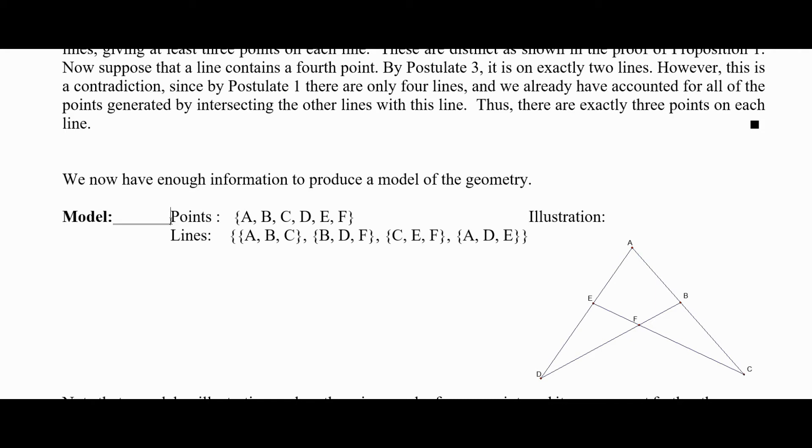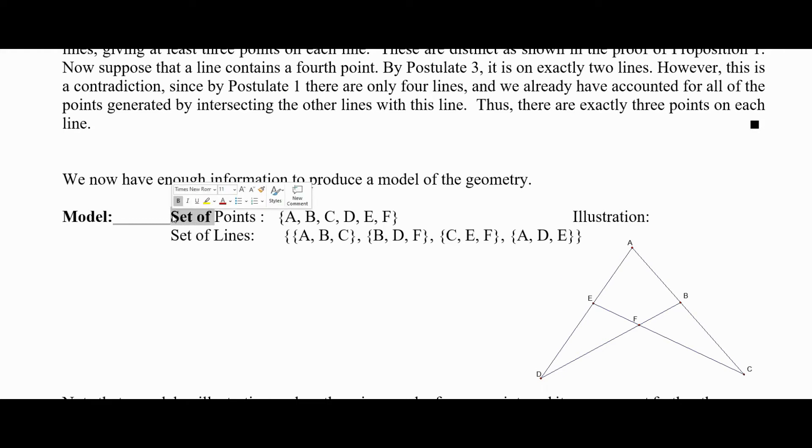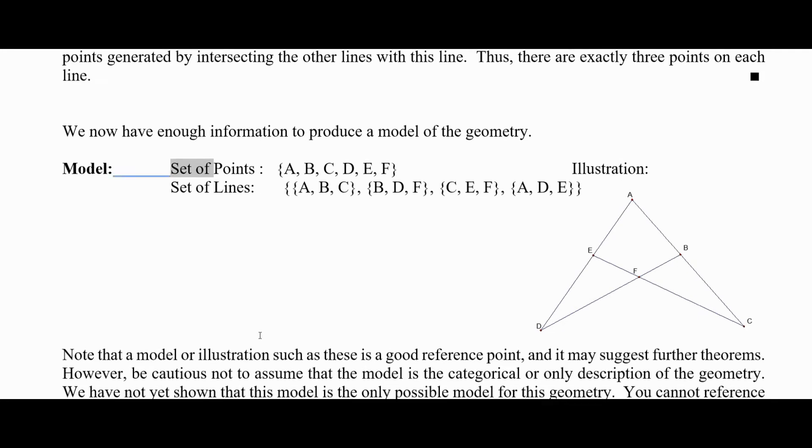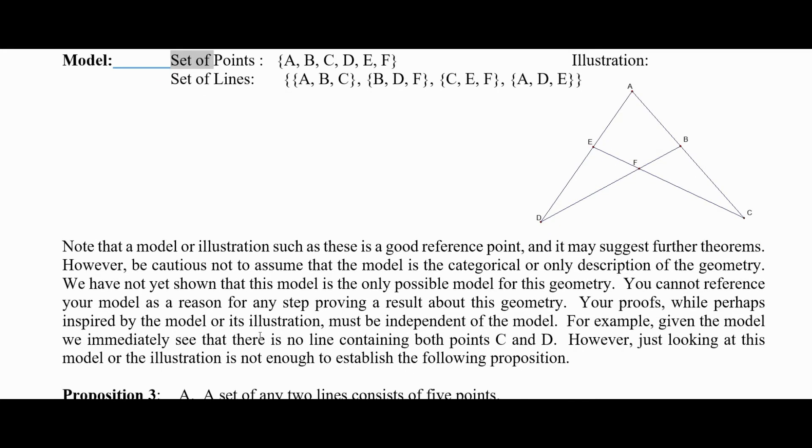And let me go ahead and make that explicit. This is a set of points and a set of lines. And then over here is the illustration. Now, this may suggest other theorems that we might prove. The illustration and the model, either one or both, is a good reference point. It may suggest other things, other propositions, or theorems. But we have to be cautious not to assume that the model is the categorical model or the only description of the geometry.